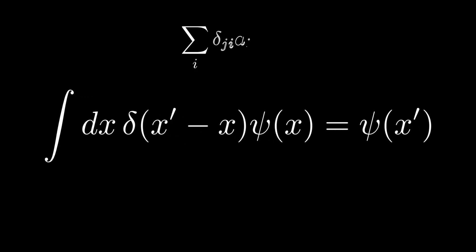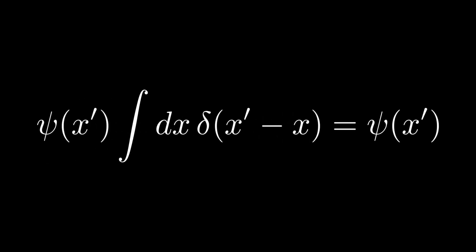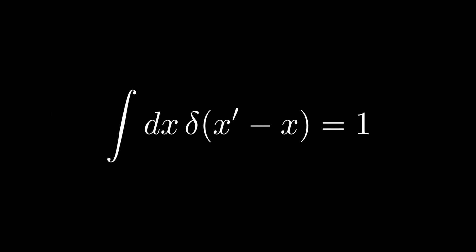We discover that, just like the Kronecker delta, Dirac delta has the same sifting property that picks out the parameter that is not being summed or integrated over. We use this property to define the Dirac delta. We gain further insight by noticing that the integrand vanishes unless x equals to x prime. Canceling the wave function at x prime on both sides yields the Dirac delta integrates to 1, just like a probability distribution.